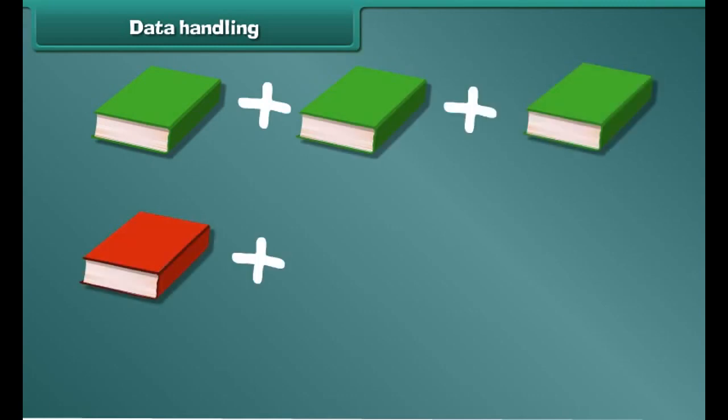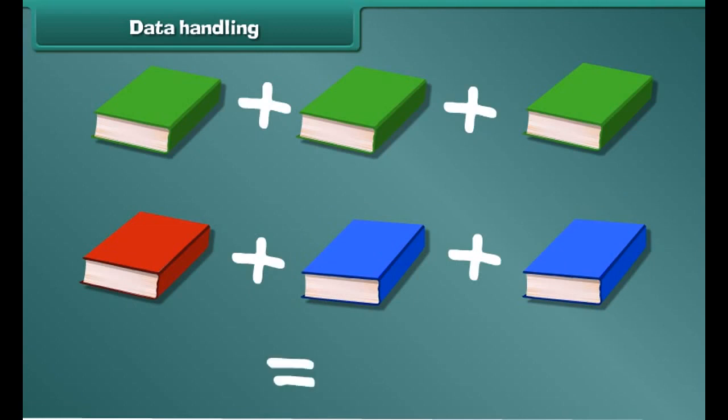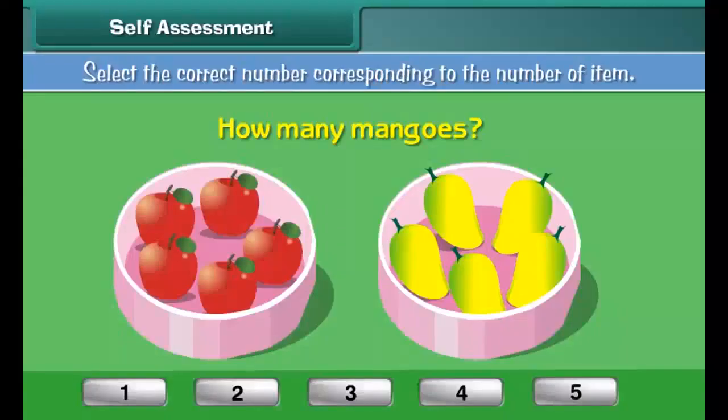How many green colored books do you see? 1, 2, 3. There are 3 green colored books.